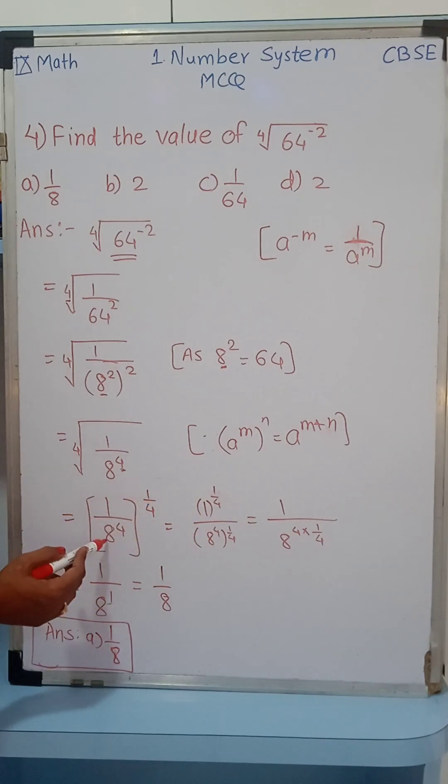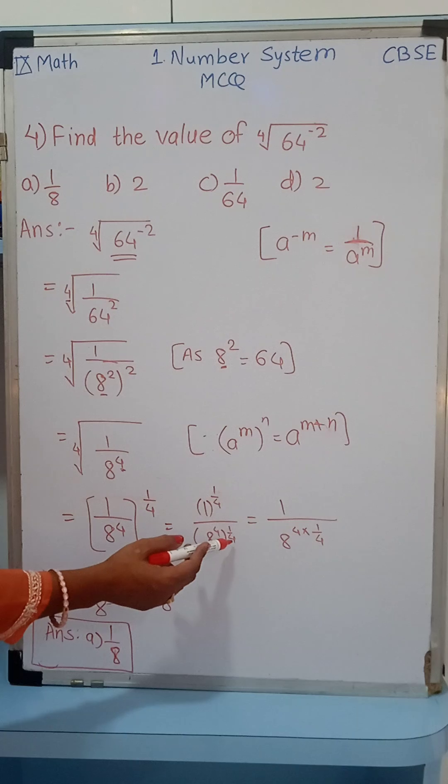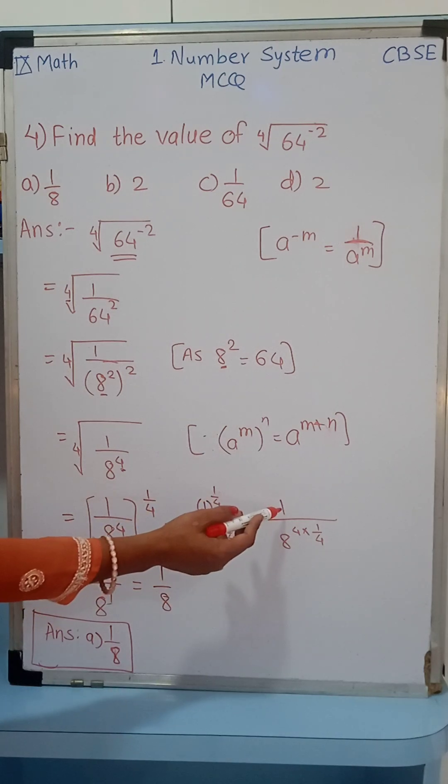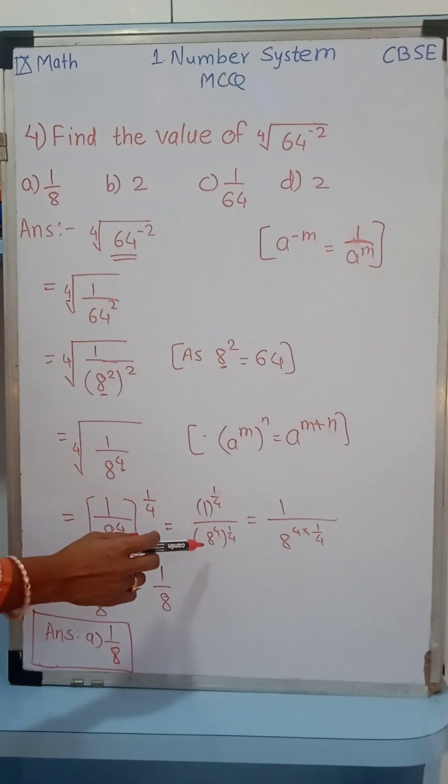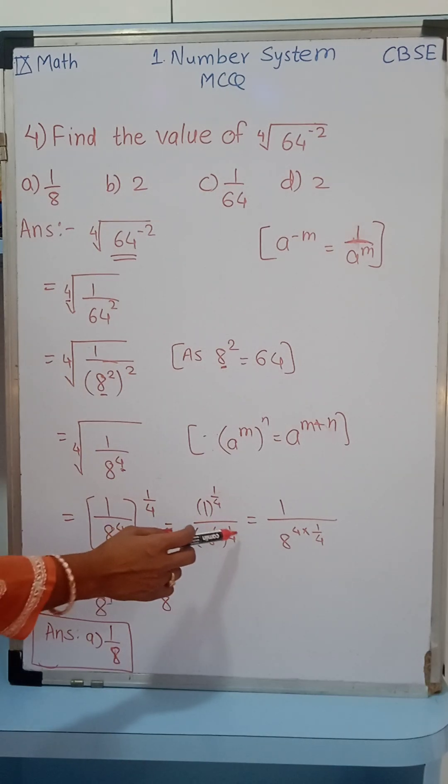So this is 1 raised to 1/4 over 8 raised to 4 raised to 1/4. So 1 raised to any power is always 1. Now here again, a raised to power raised to power.